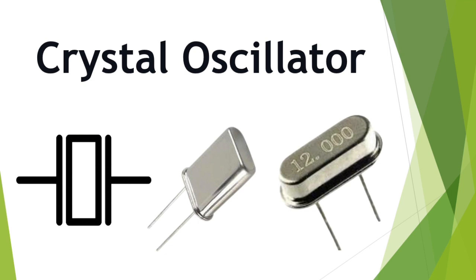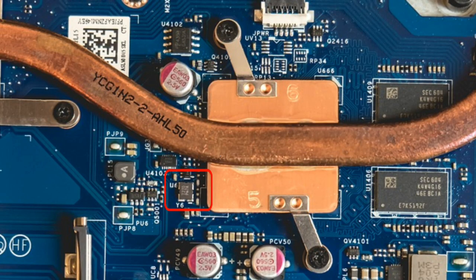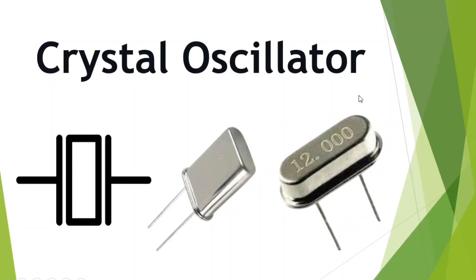So here we have another component: the crystal oscillator. Basically, this is the symbol for the crystal oscillator. Its reference is usually X or Y on the motherboard. Here we have some real pictures of crystal oscillators. This crystal oscillator is always found near the frequency generator, and it gives the circuit a very specific frequency — for example, twelve thousand kilohertz or twelve megahertz.